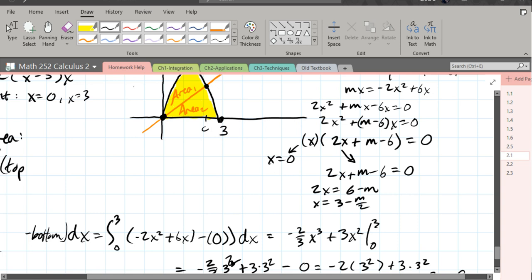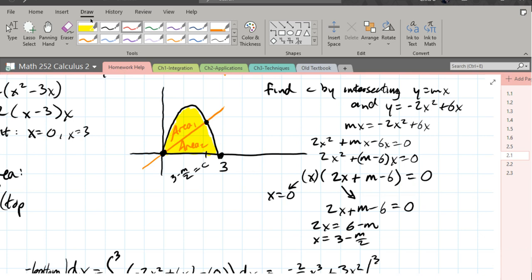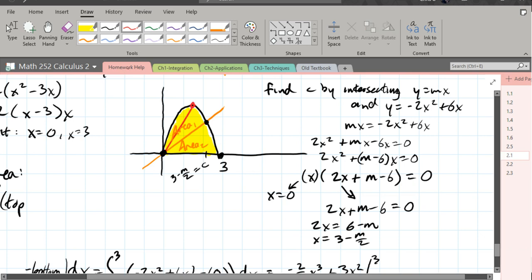3 minus m over 2. That is c, our c value right there. So c is 3 minus m over 2. And you might be worried, oh my goodness, there's an m in there. But if you look at what's happening in the graph, if your slope changes, if this slope was much steeper, you would get a different intersection point. So it makes sense that the x value where the curve intersects the line is going to change depending on the slope of that line.